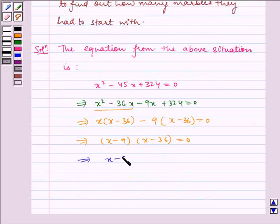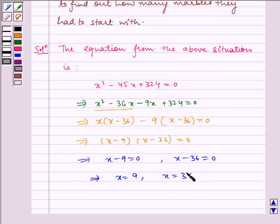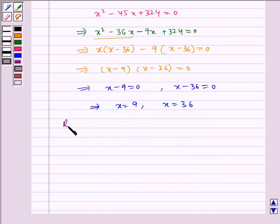Which implies x minus 9 equals 0 and x minus 36 equals 0. Which implies x equals 9 and x equals 36. Therefore, required roots are 9 and 36.